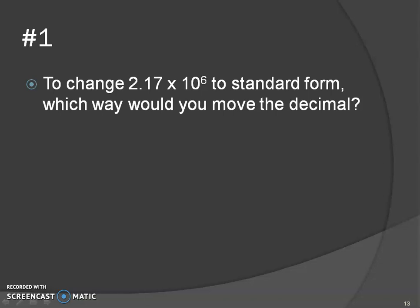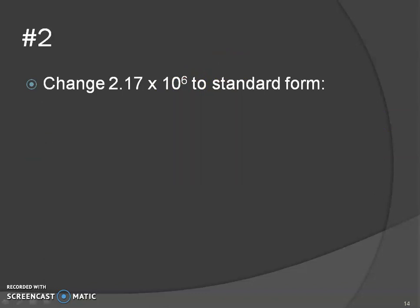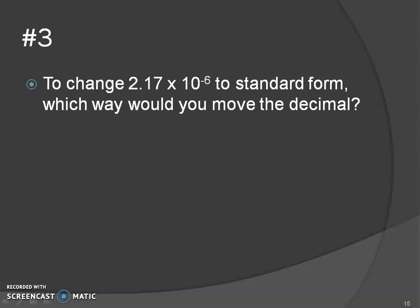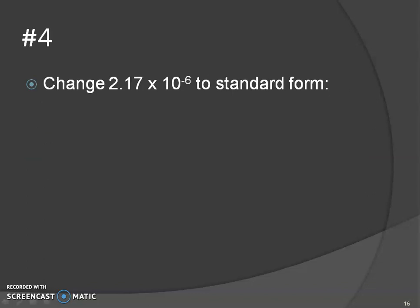For number one: which way are we going to move the decimal? You should have said right, because of the positive exponent — that's the why. For number two, change it to standard form: take that decimal and move it six times to the right — that should be your answer. For the next one, which way are we going to move the decimal? We're moving it to the left because the exponent is negative. I'm not too worried about the exact wording as long as you have something along those lines.